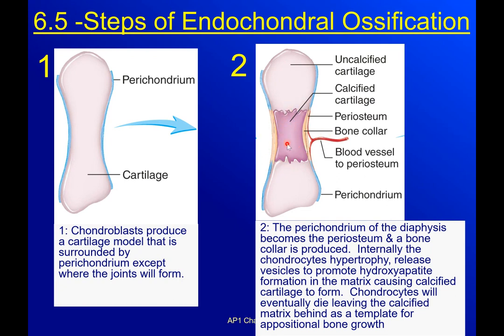Internally, the chondrocytes begin to hypertrophy — which is just a fancy way of saying swelling — so they begin to swell up and expand, basically making a better model for the bone to eventually cover. The chondrocytes release vesicles that promote hydroxyapatite formation in the matrix. That cartilage matrix that used to be rubbery is now going to be completely solid — it's going to turn into cement. The cartilage cells surround themselves in a cement box and then die, basically leaving the template that the bone can use.